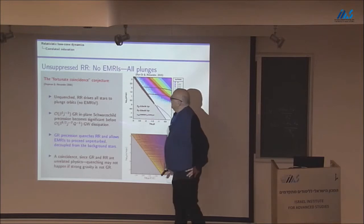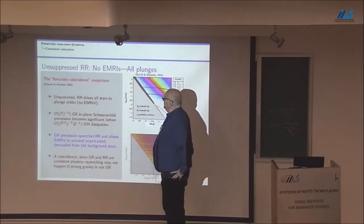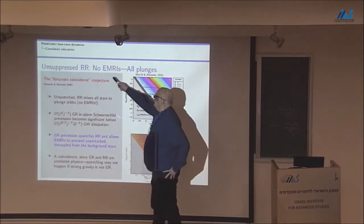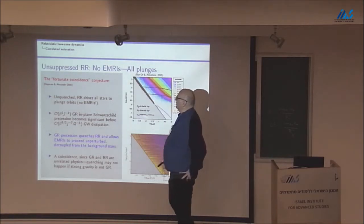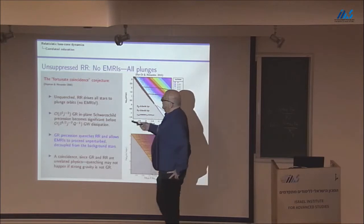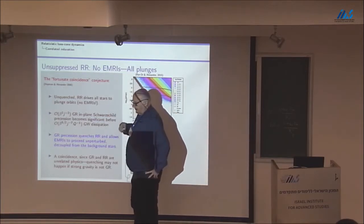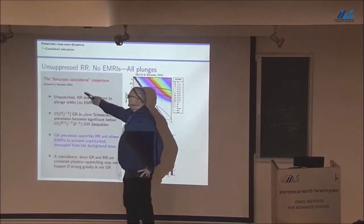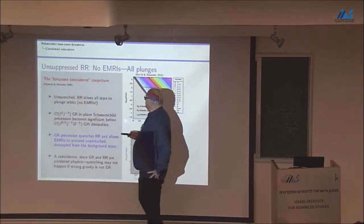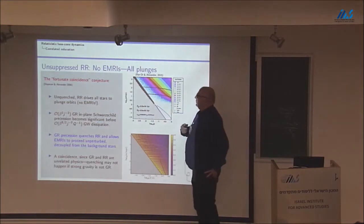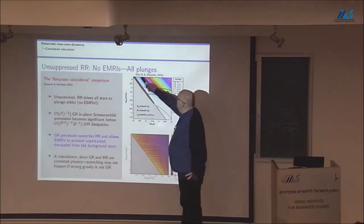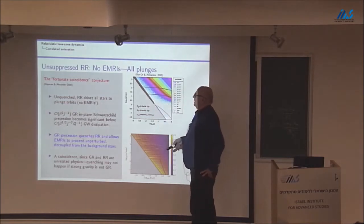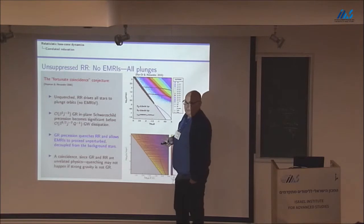So, if you can't suppress RR or resonant relaxation, you would have zero EMRIs or any other in-spiral events, and all would be plunges. And this led us, but GR actually does introduce in-plane precession, pericenter precession. So, this has led us to introduce the fortunate coincidence conjecture, and here I'm revealing my bias. I mean, for people interested in TDEs, this would be TDE heaven. Many, many TDEs. Nothing wasted on these annoying and uninteresting EMRIs.